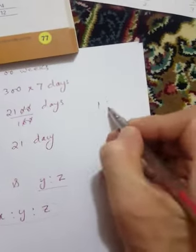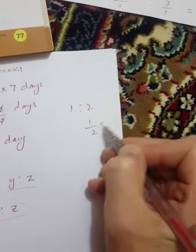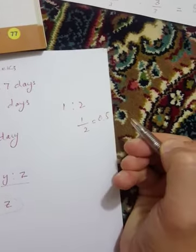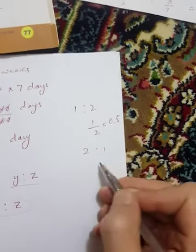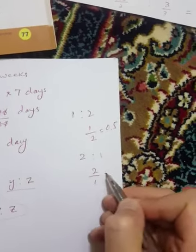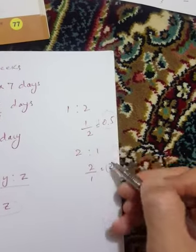For example, one ratio two means one over two, which equals 0.5. But if we change the order to two ratio one, that means two over one which equals two. There's a huge difference - one is half, the other is double.